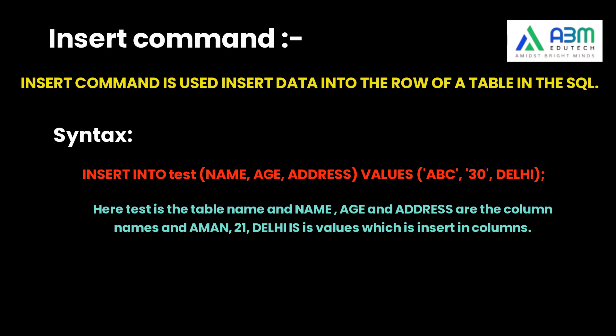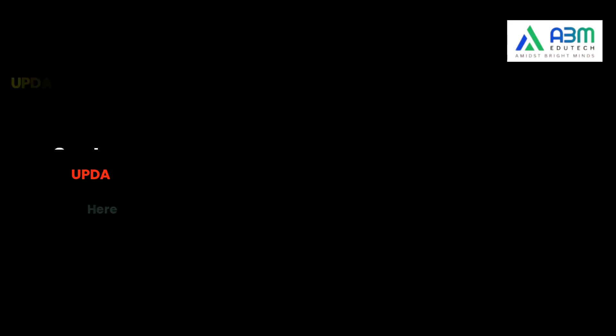VALUES (then write the values — for example, in the name column: ABC, in the age column: 30, and in the address column: Delhi). This is how we can insert a record into the table.